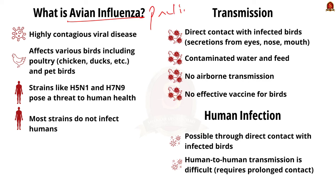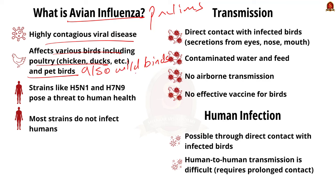Avian flu is a highly contagious viral disease affecting a variety of birds including chickens, ducks, turkeys, and quails — both pet birds and wild birds. Virus strains such as H5N1 and H7N9 pose a threat to human health as well, but generally, most avian influenza viruses do not affect humans.